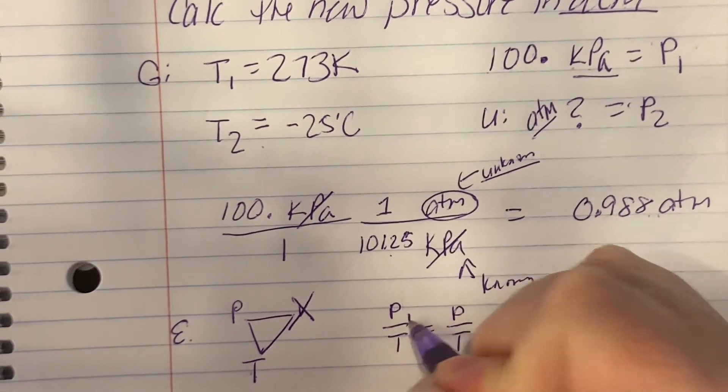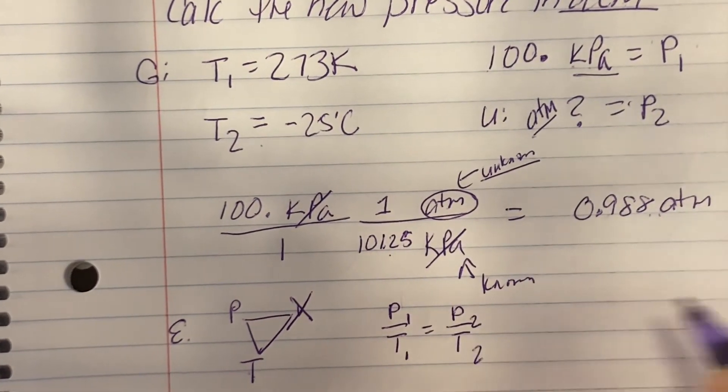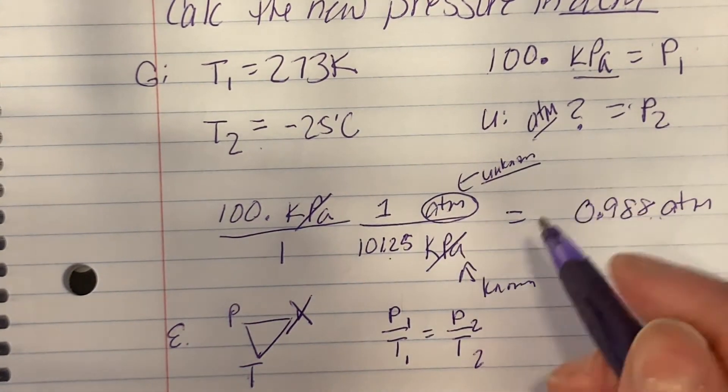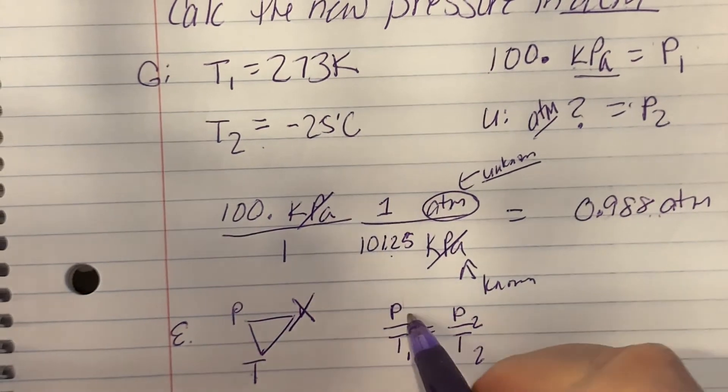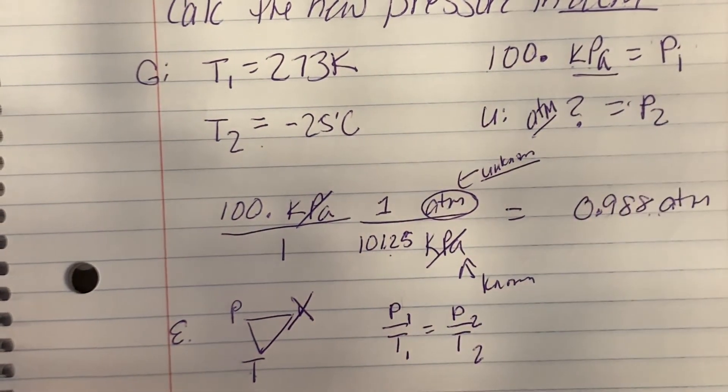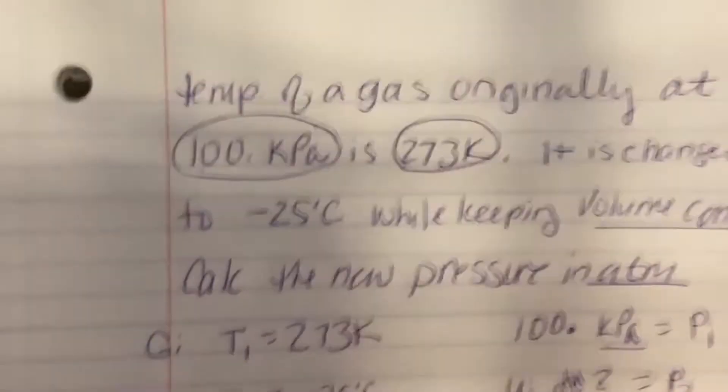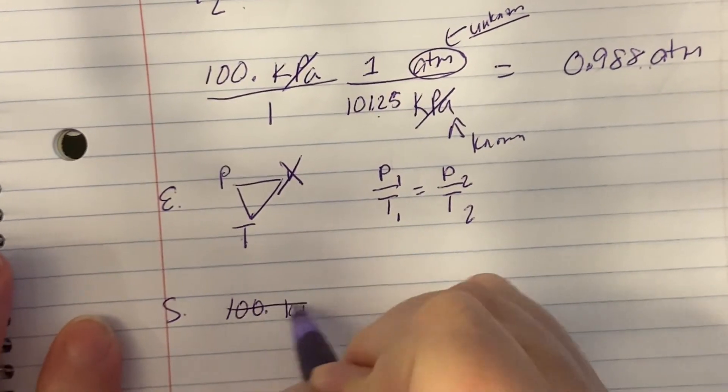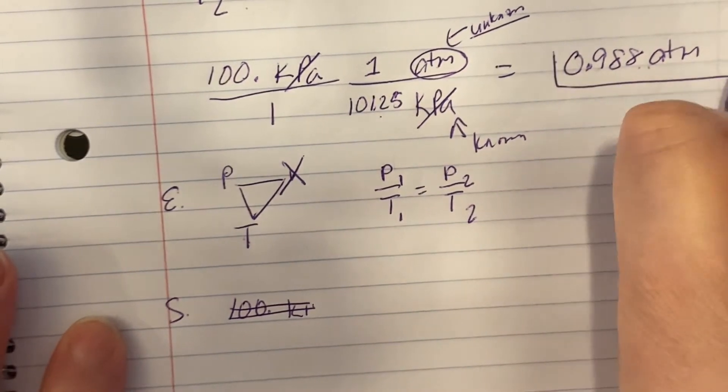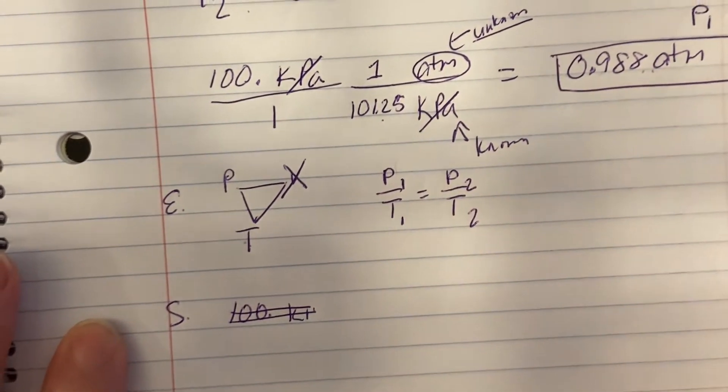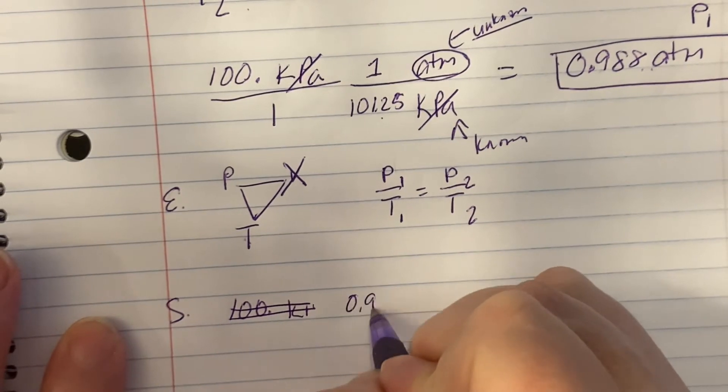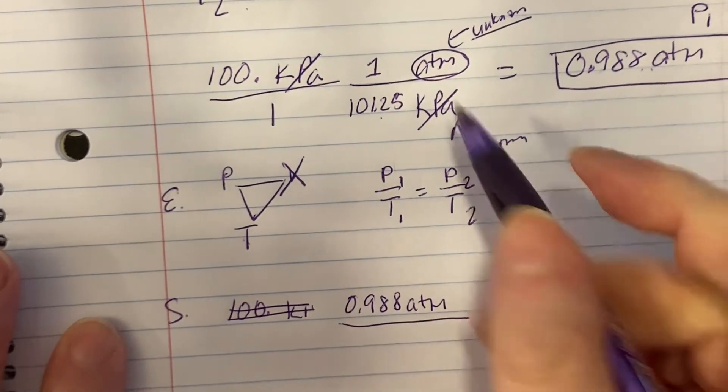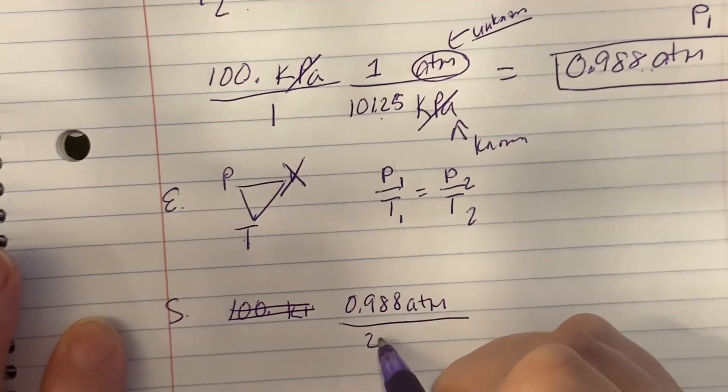Our equation is P over T equals P over T. We're going from the start to the end. So P1 over T1 equals P2 over T2. And now let's substitute. P1, 100 kPa. Oh sorry, that's not right. We have a new P1, don't we?